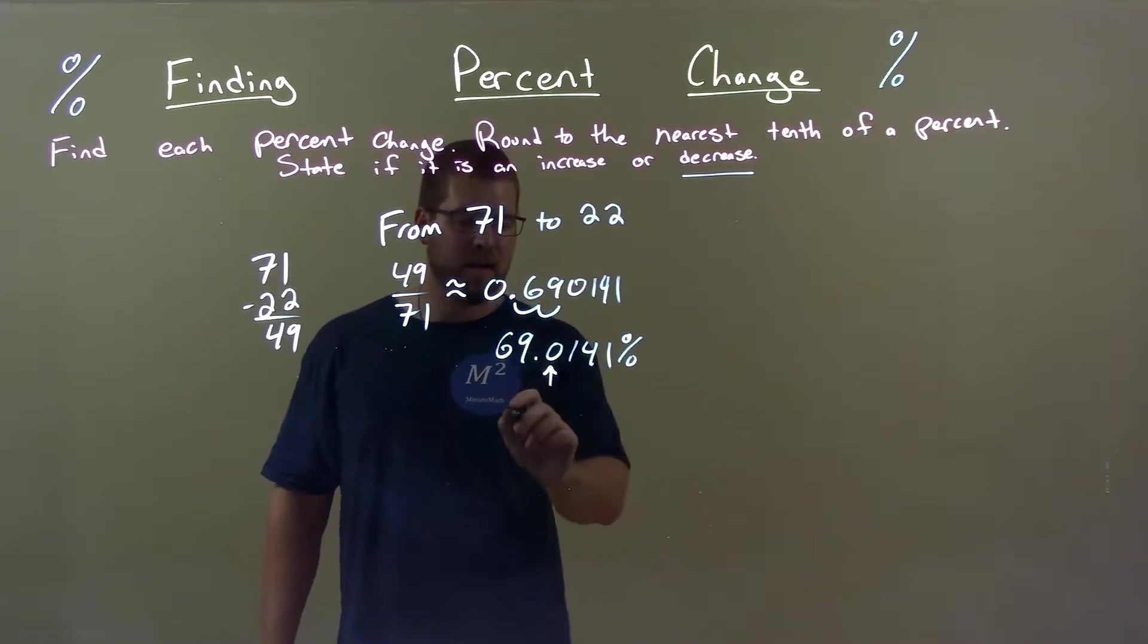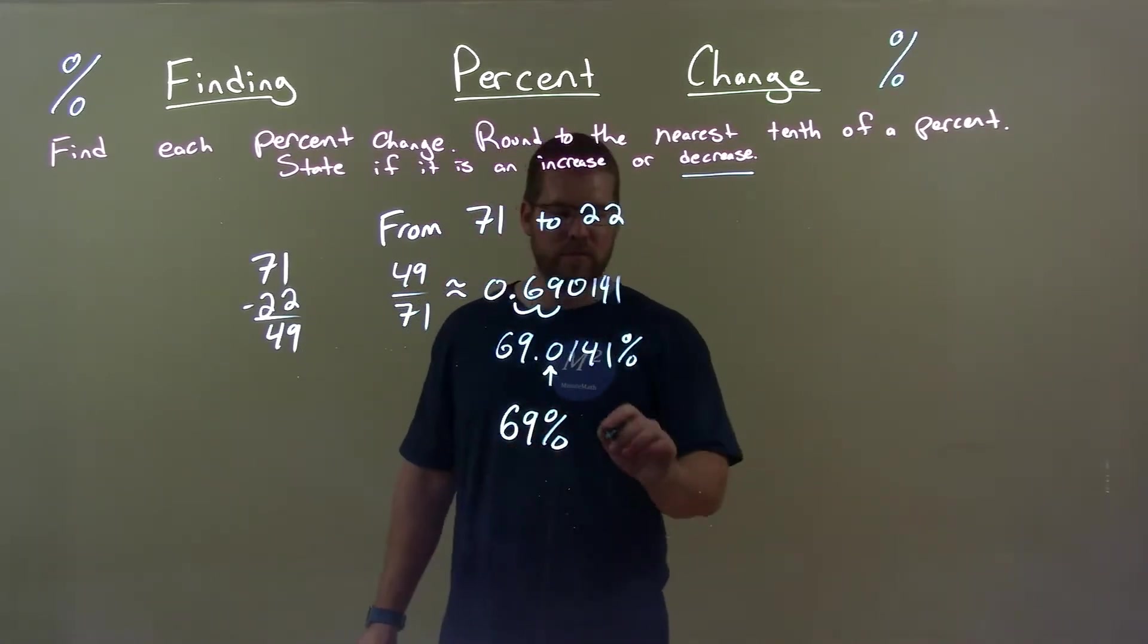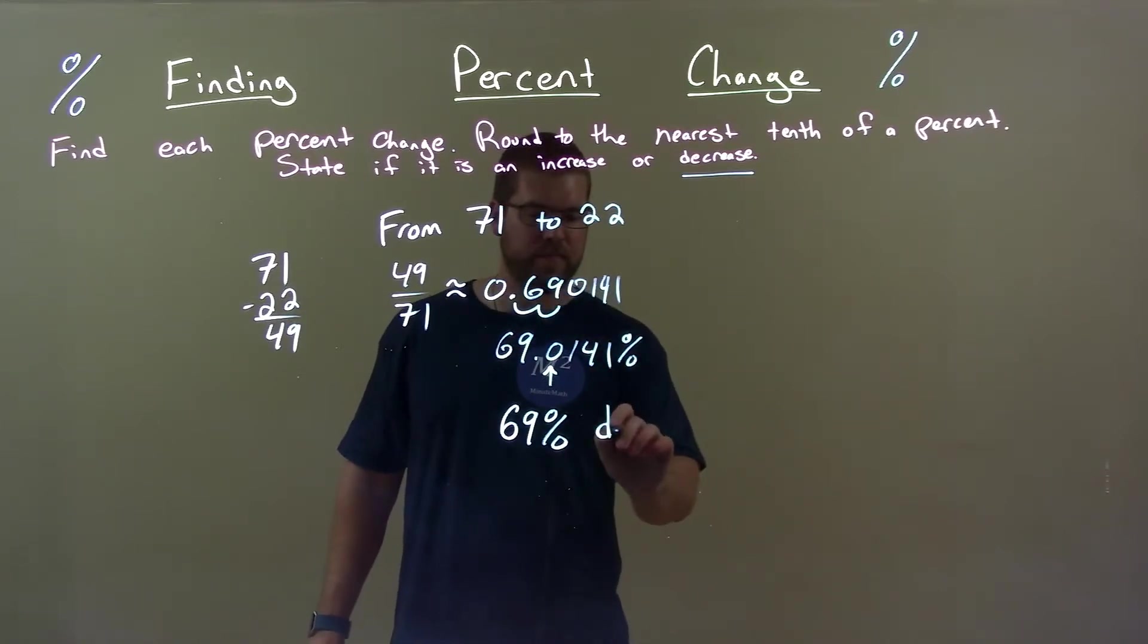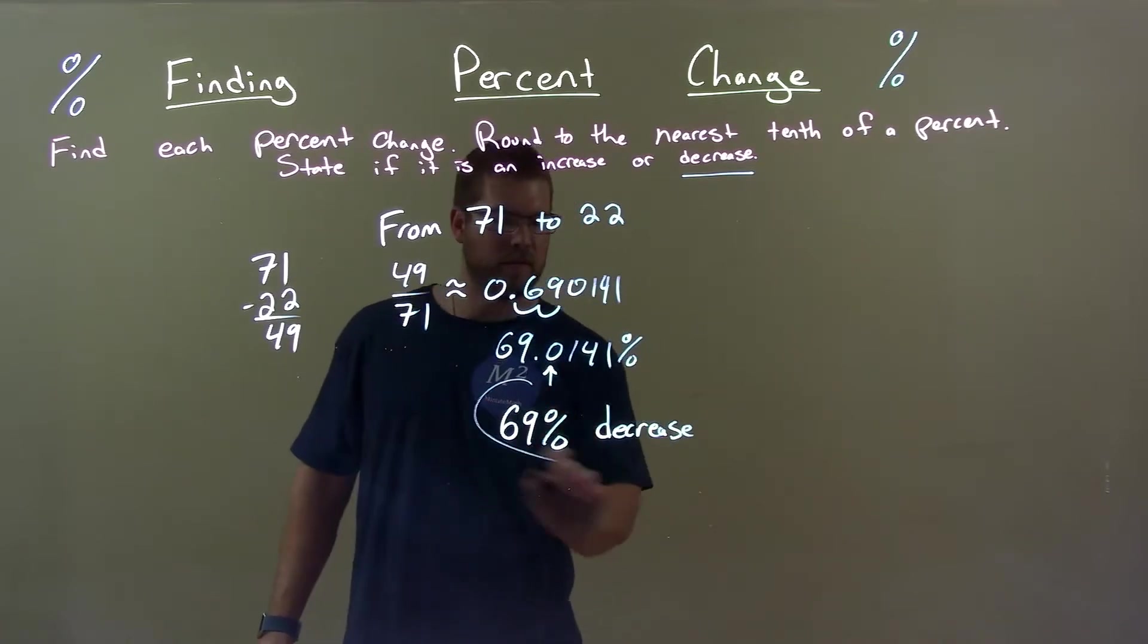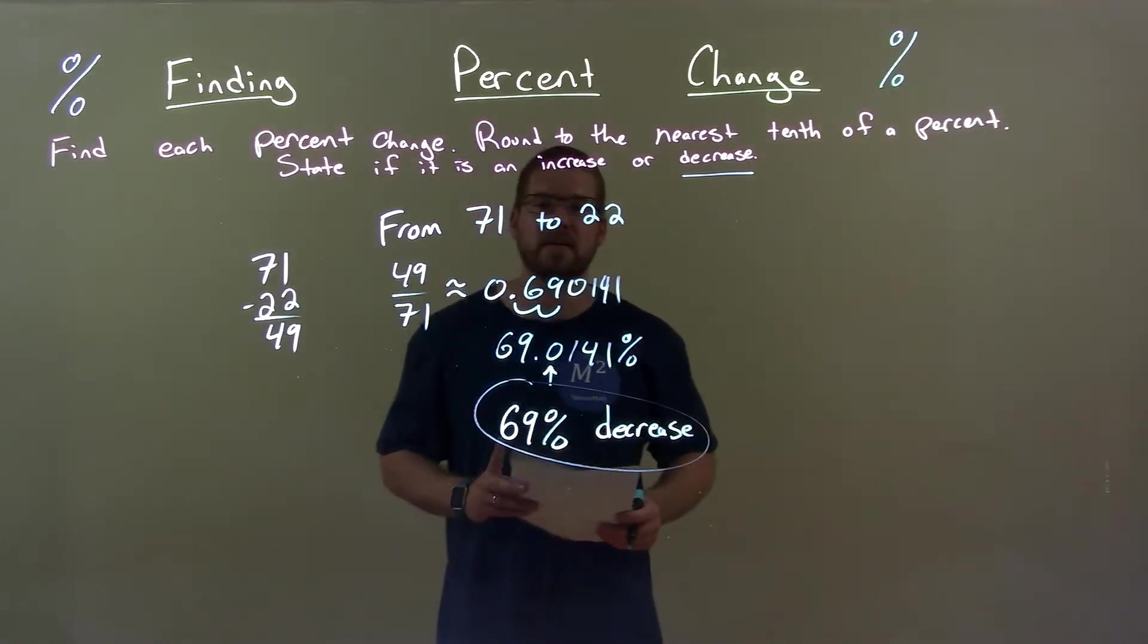So, sometimes you might not see it there. And that's just a 69 percent. Okay? We saw it was a decrease or we said it was a decrease. And there we have our final answer, a 69 percent decrease.